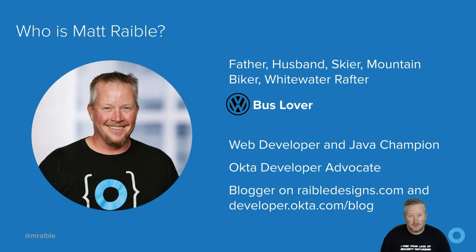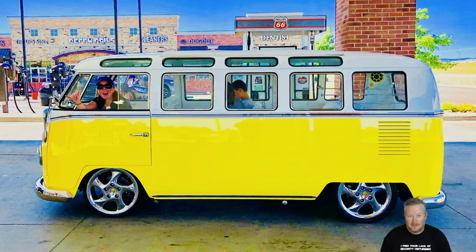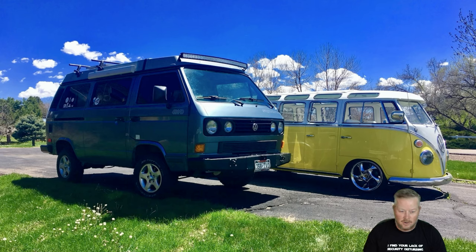I'm a web developer and Java Champion. I also work at Okta as a developer advocate. I live in Denver, Colorado with my lovely wife Trish and my two awesome kids, Abby and Jack. I also have a middle child — his name is Hefe, short for Hefeweizen. He's got a Porsche 911 engine in him and a 915 transmission. I bought him off eBay in 2004 and it took 12 years to make him look like this. I have an expensive obsession with Volkswagens — I also have a Synchro Westie named Stout. If you have a similar problem, I'd love to compare stories in the comments or on Twitter.